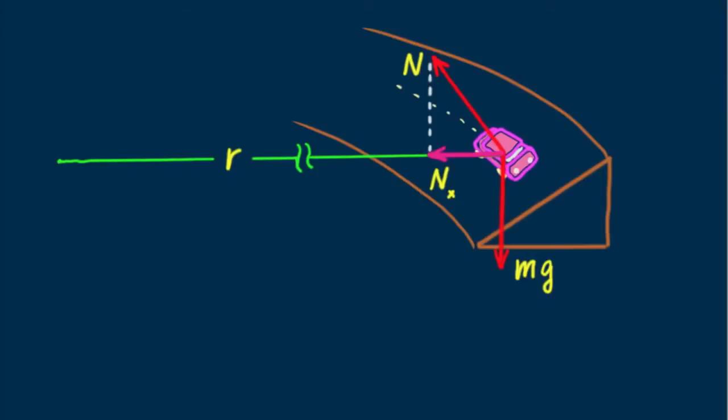When N sub X satisfies the equation Mv squared over R, no friction force is needed. None. The car would make the turn even if the road surface were slippery ice. And what's N sub Y? Since there's no vertical acceleration, the magnitude of N sub Y equals Mg. Yum!